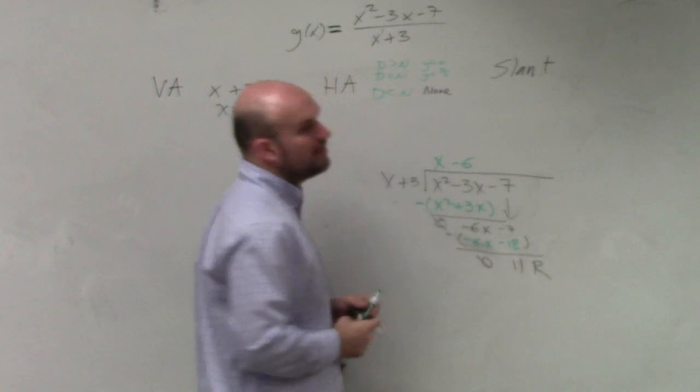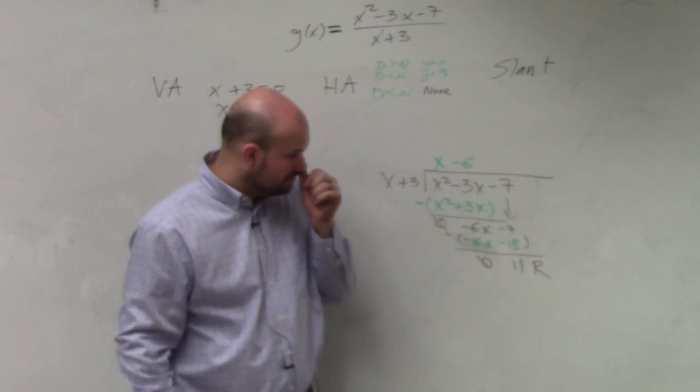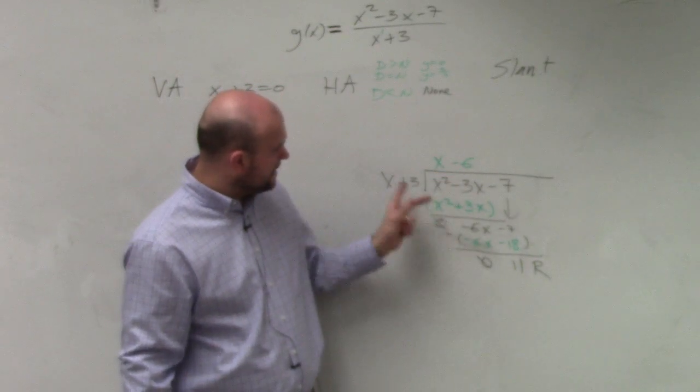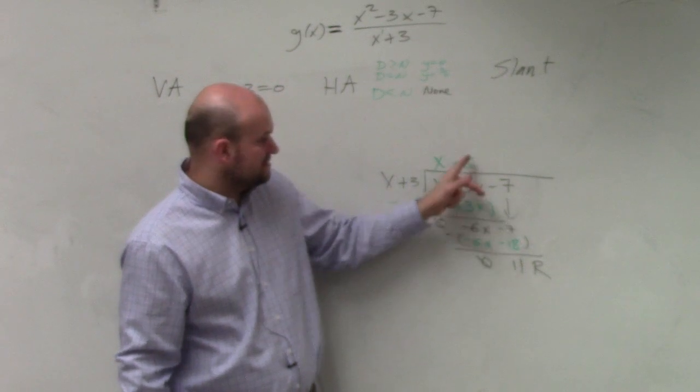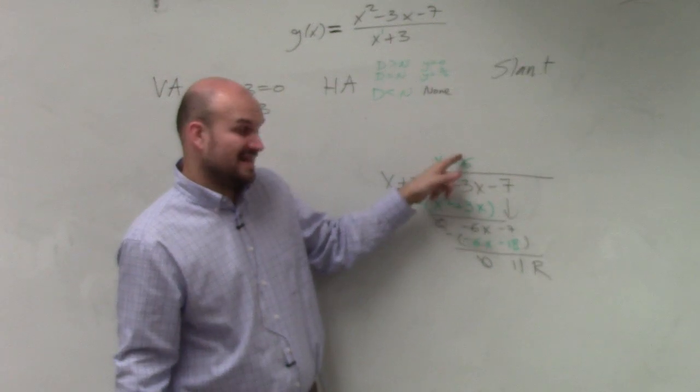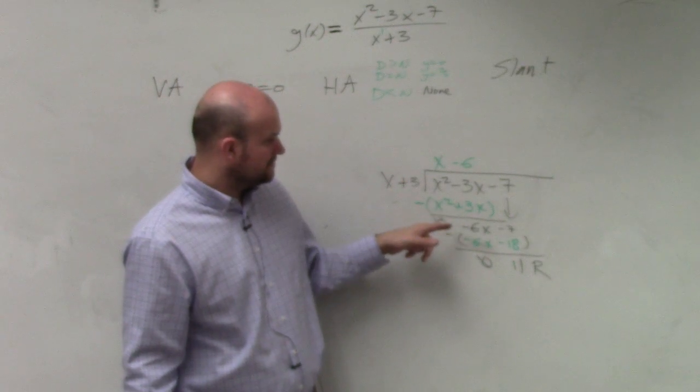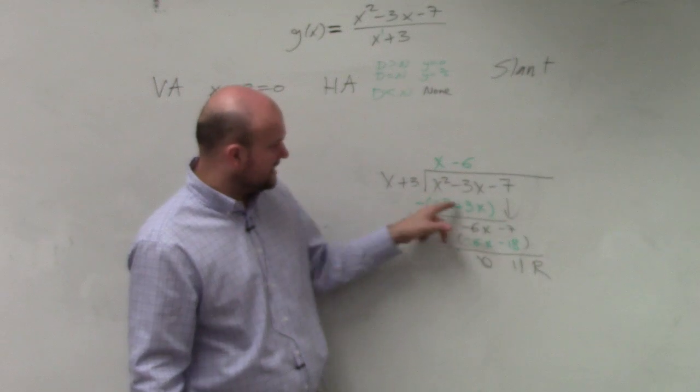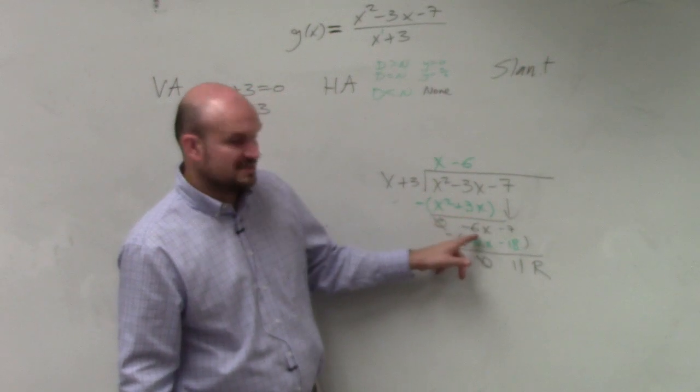And that's your remainder. However, yes, how many times does x go into negative 6x? Negative 6 times. Now, remember, you take that negative 6. Why didn't you bring down negative 6? I didn't. I did negative 3x minus 3x is negative 6x. Right.